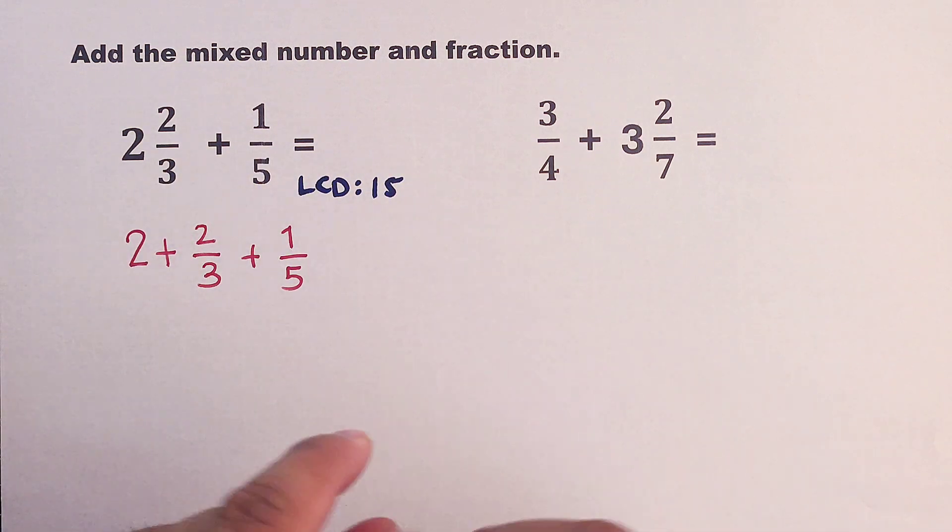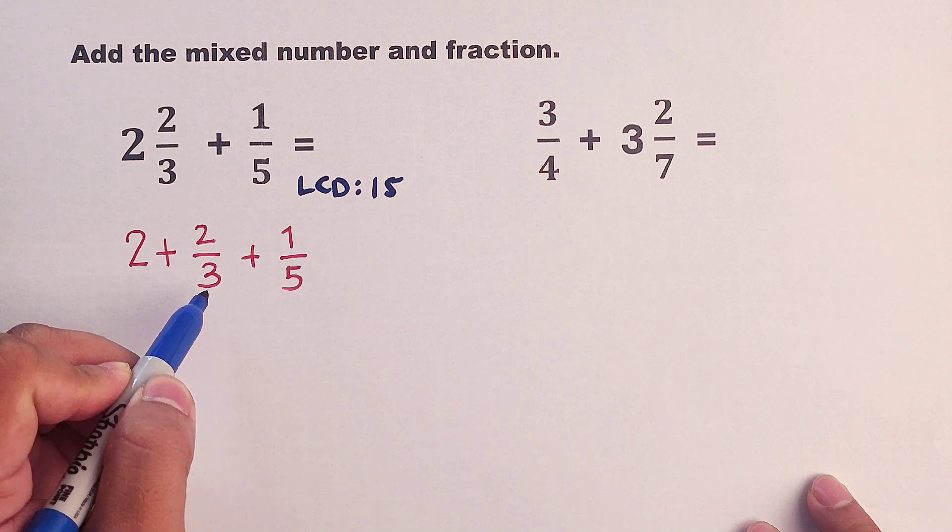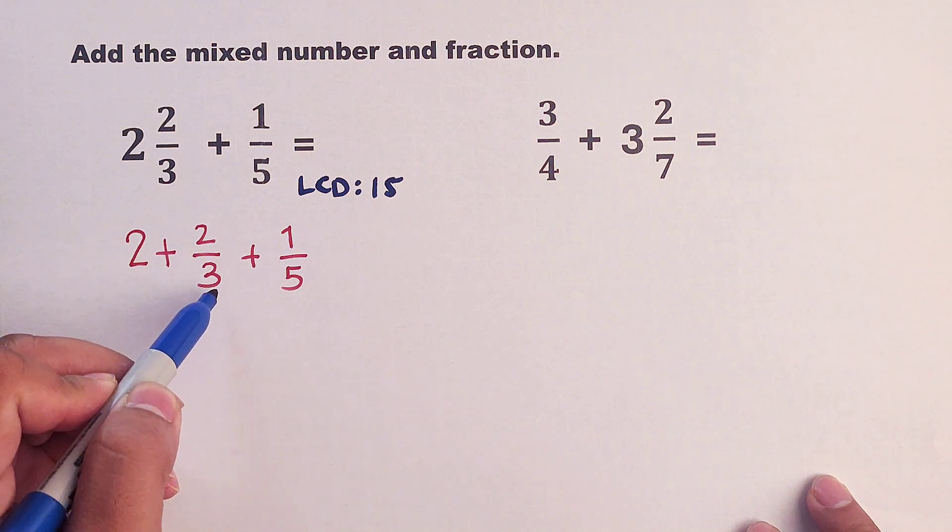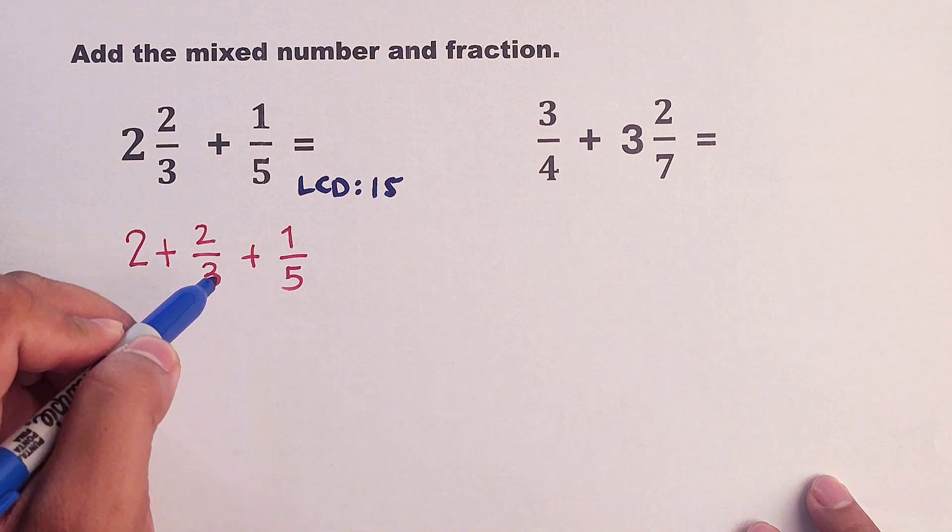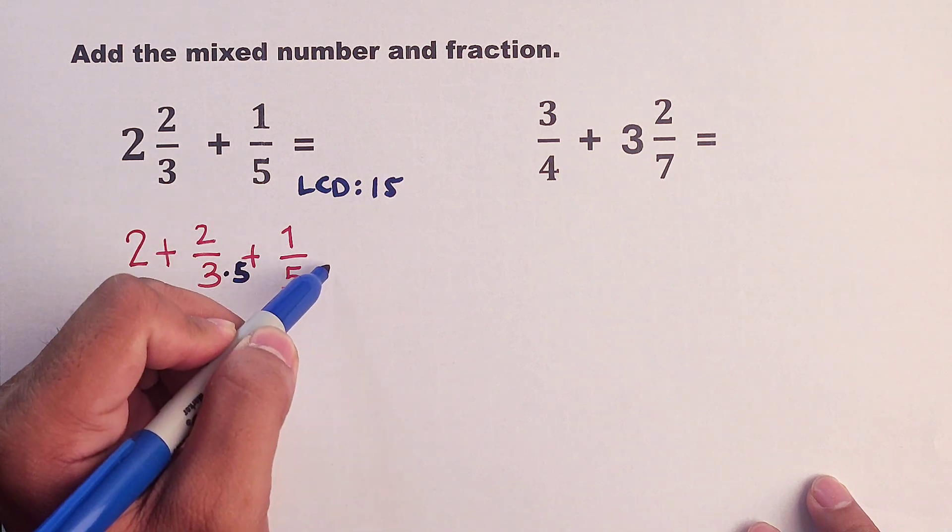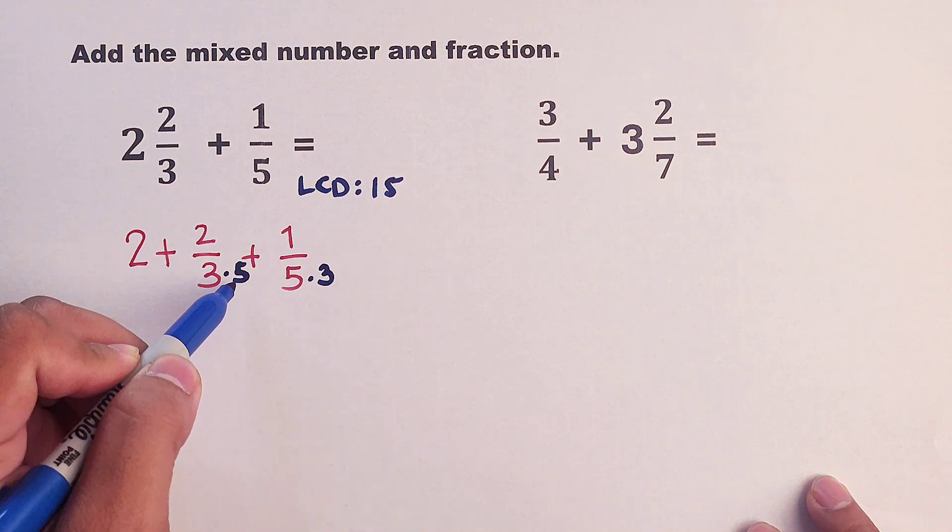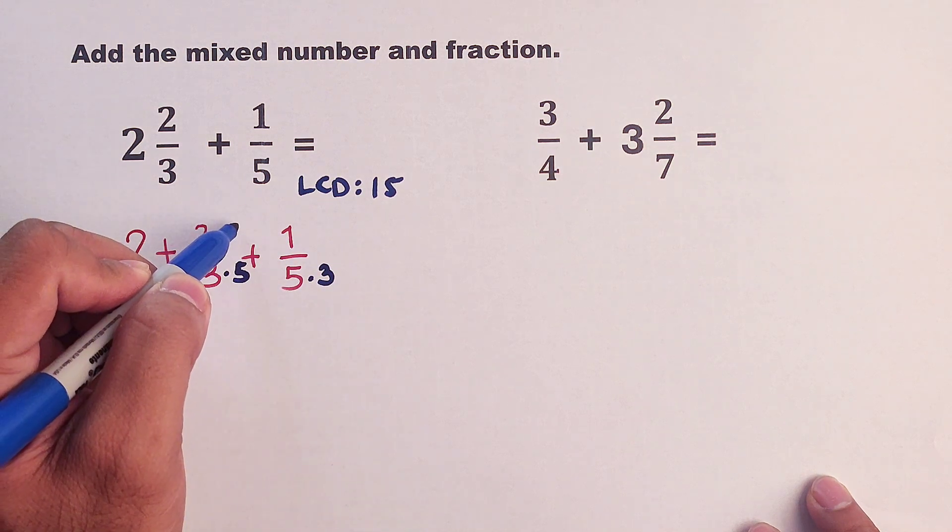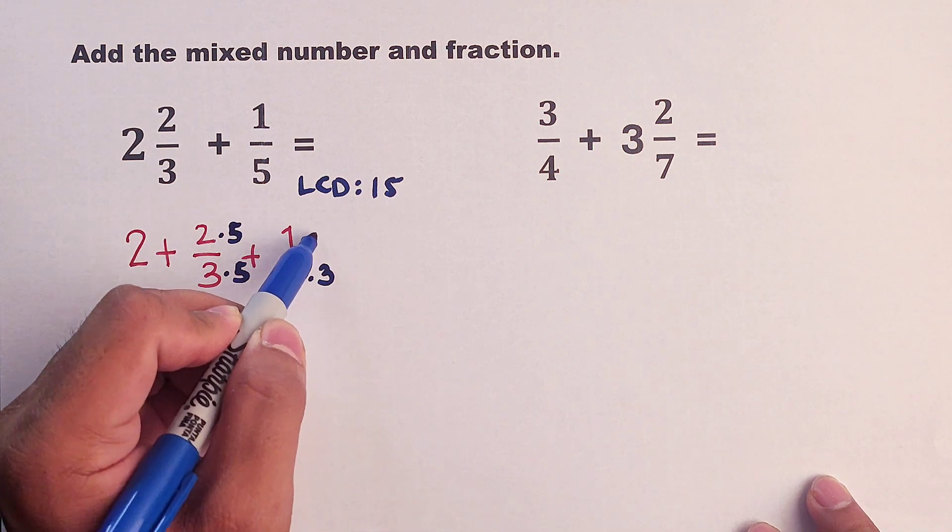Now, our target is to think of numbers that we need to multiply to make this 3 and 5 be equal to 15. This 3 must be multiplied by 5. This 5 must be multiplied by 3. And also, if this is multiplied by 5, your numerator must be multiplied by 5 also. Same with this 1, this is times 3.